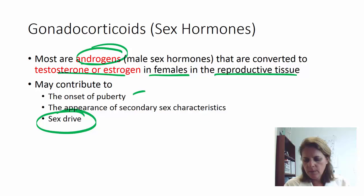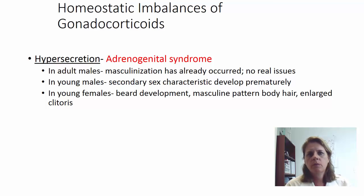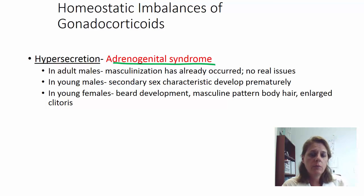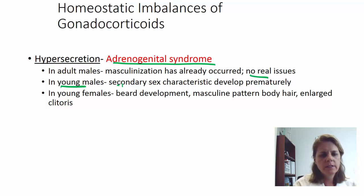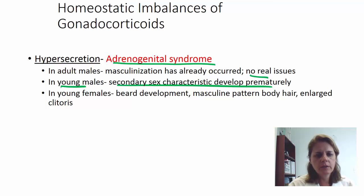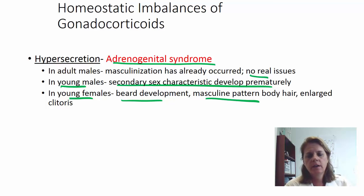Hypersecretion of gonadocorticoids is called adrenogenital syndrome. In adult males it's not very noticeable since they're already masculinized, but in young males secondary sex characteristics develop prematurely — you may see a four or five year old with underarm hair. In young females, because these are androgens, you'll see facial hair like a beard, masculine body hair, and an enlarged clitoris — females appear masculinized due to excess male hormone.